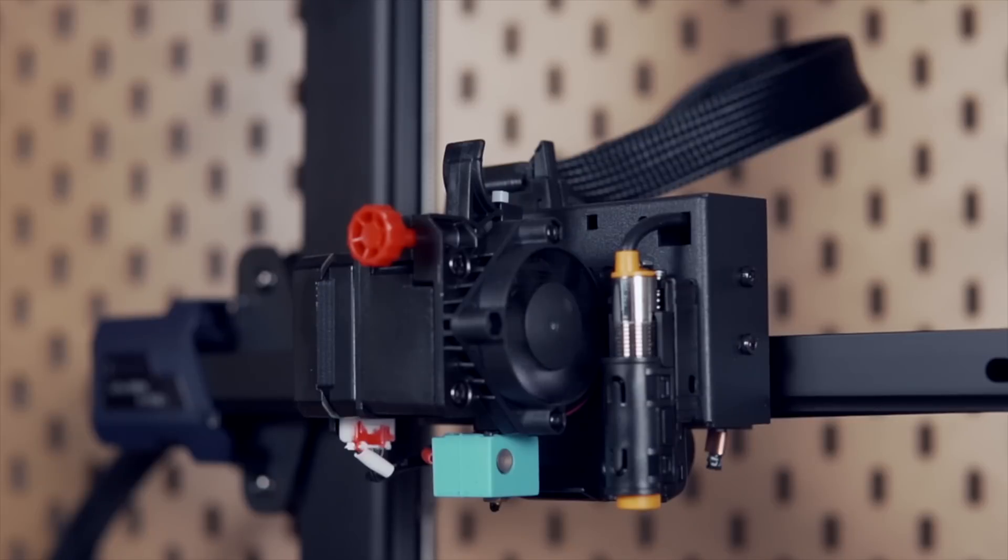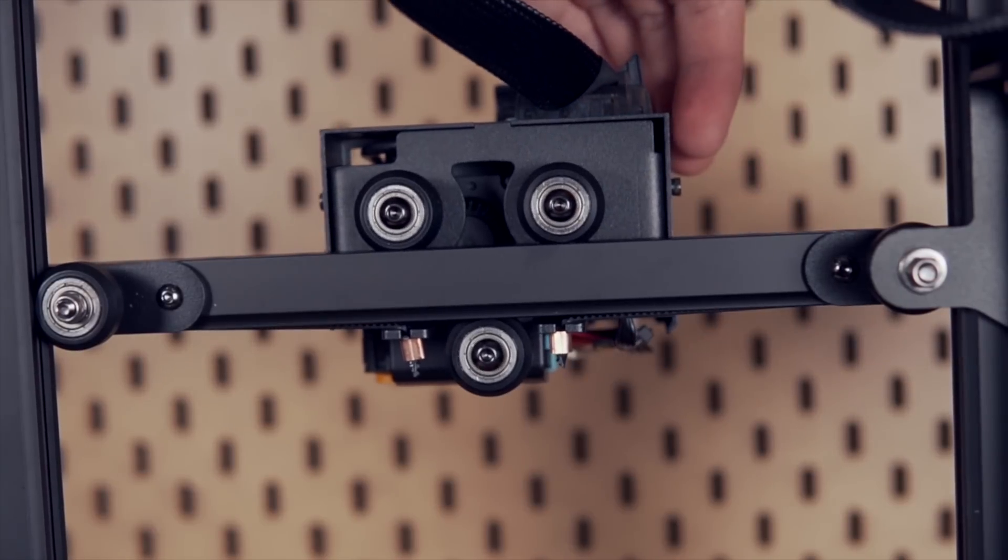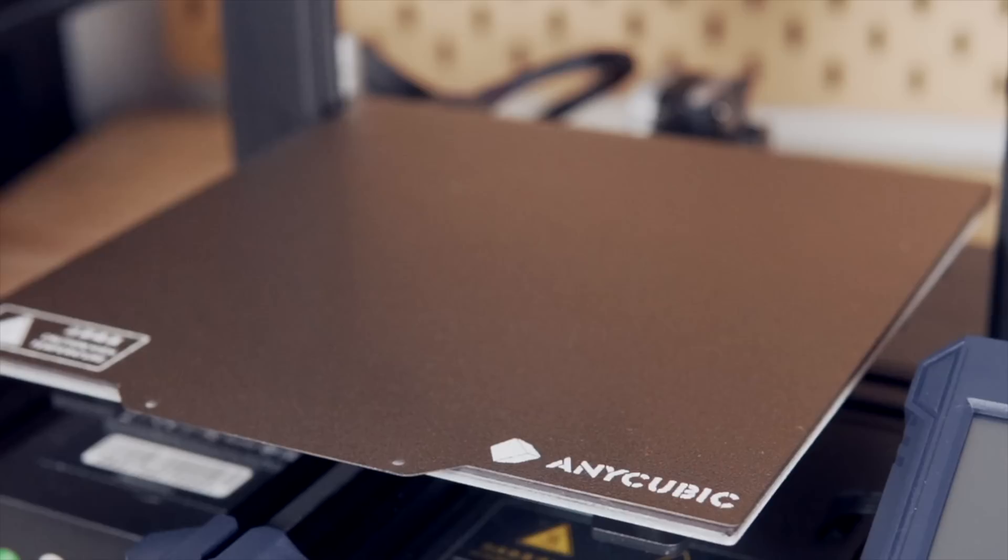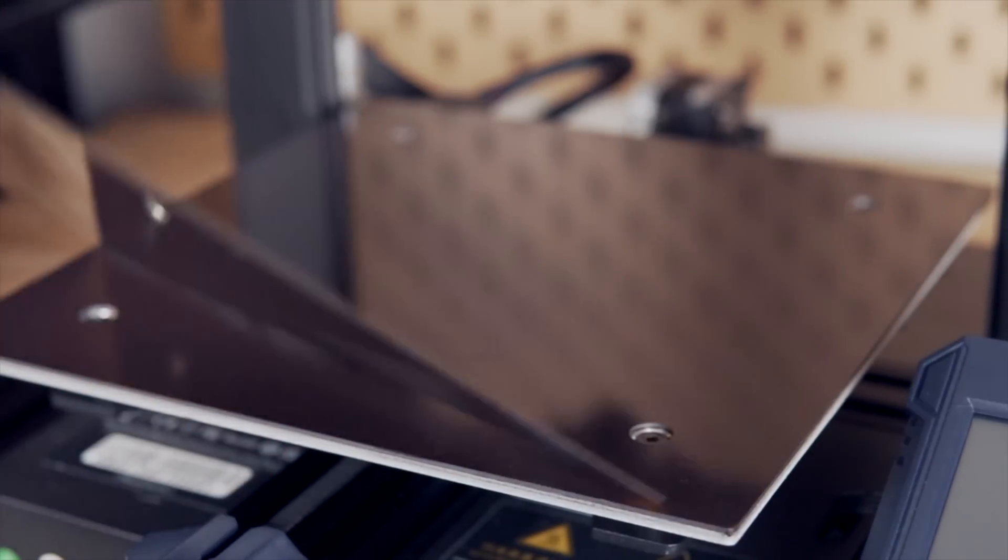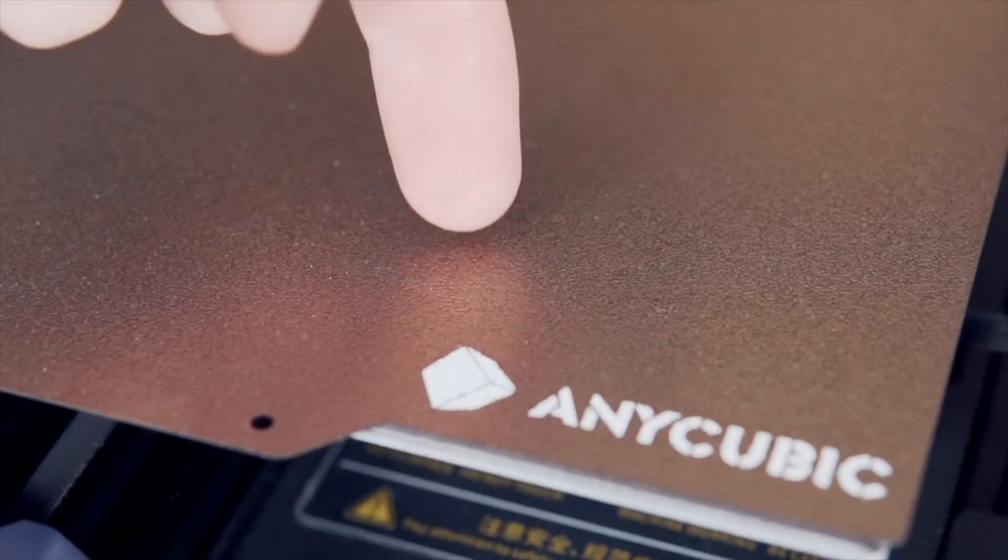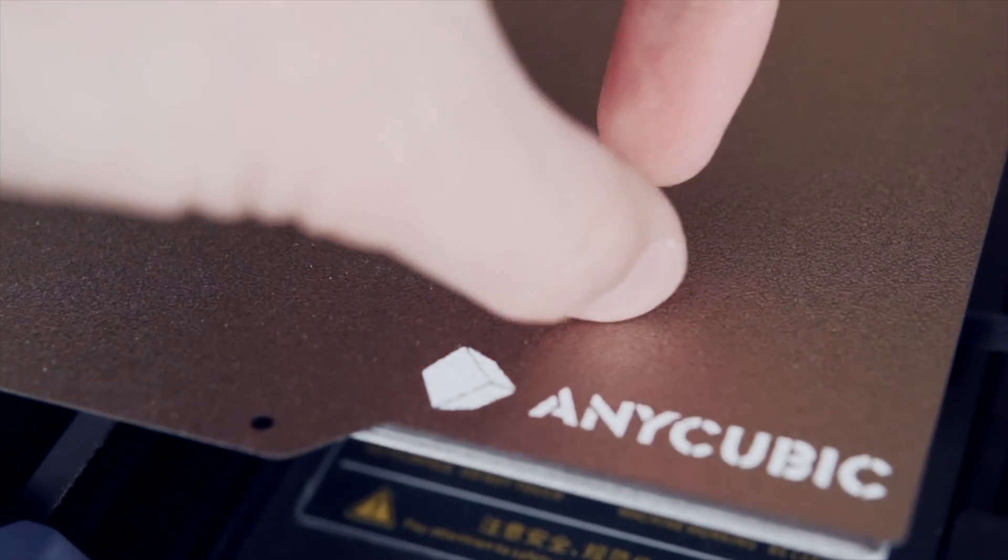As far as cooling, there is one fan on the heat sink and there is a larger blower style fan on the back for part cooling. The Cobra comes with a magnetic powder coated PEI bed, which is my absolute favorite build surface for day-to-day 3D printing.